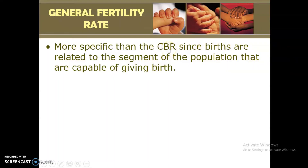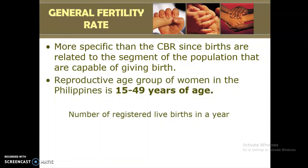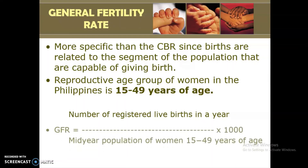If we want a more specific estimation of the total birth rate of the Philippines, we use the general fertility rate. The general fertility rate is based on the population considered as fertile — that is, women 15 to 49 years of age, which is considered as the women of reproductive age. The formula is: number of registered live births in a year over the mid-year population of women aged 15 to 49, multiplied by the constant number 1,000.